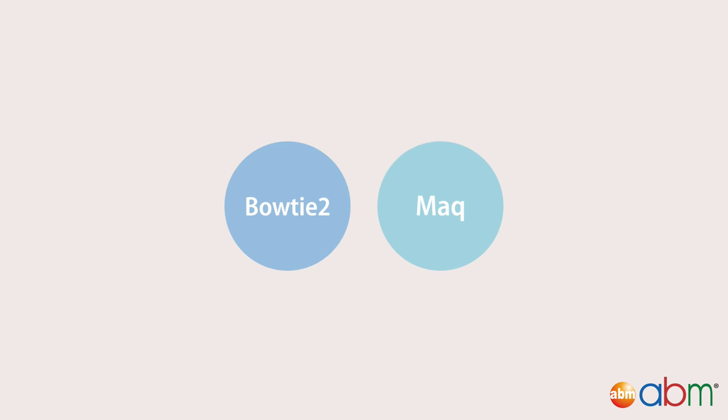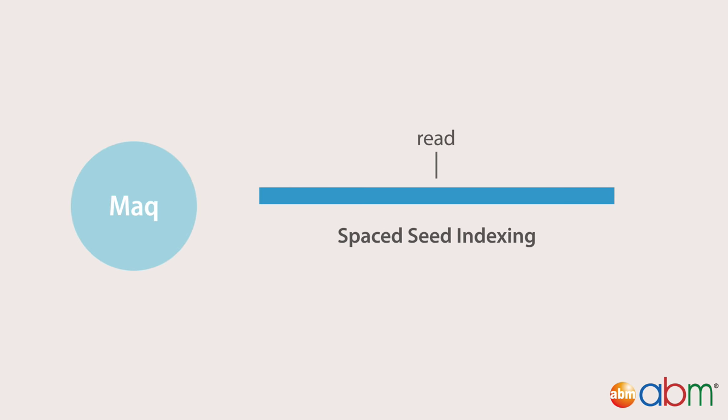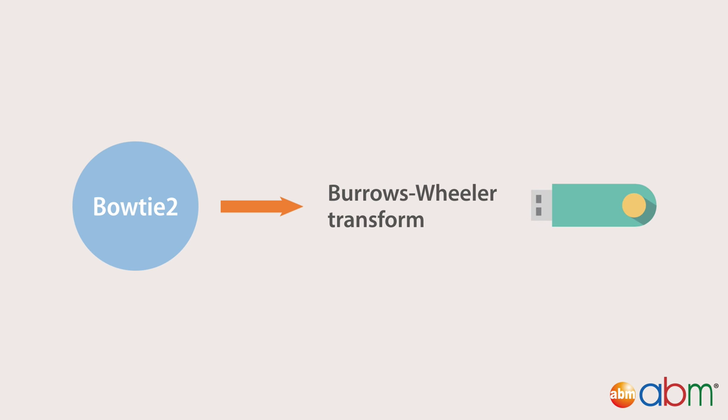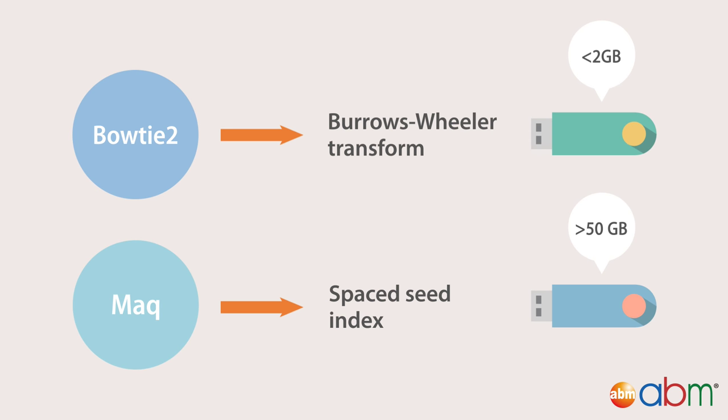Programs such as MAC and Bowtie use a computational strategy called indexing, which works much like the index at the end of a book to speed up mapping algorithms that takes an index of a large DNA sequence and rapidly finding shorter sequences embedded within it. MAC uses spaced seed indexing where a read is divided into four segments of equal length, called seeds. Bowtie uses a different technique called Burroughs-Wheeler transform that can fit the entire human genome in less than two gigabytes of memory. In contrast, MAC's spaced seed index approach will likely require more than 50 gigabytes of memory to align the sequences efficiently.